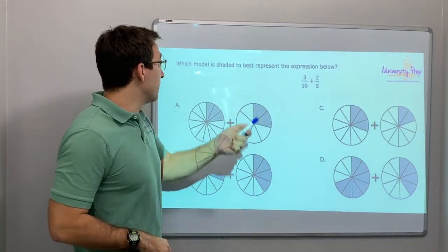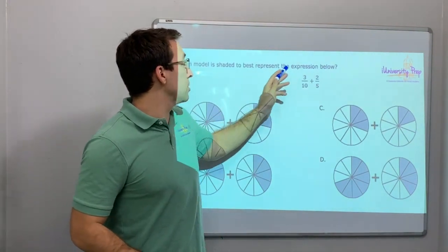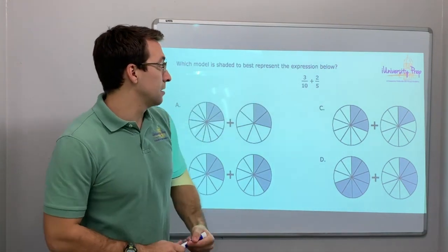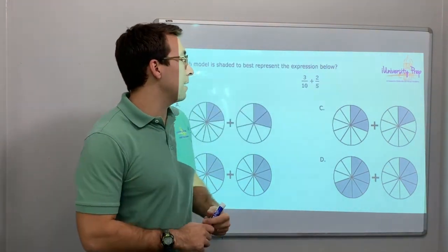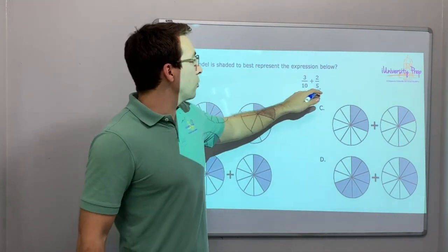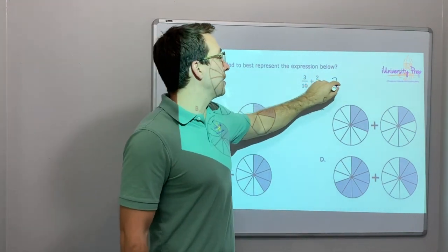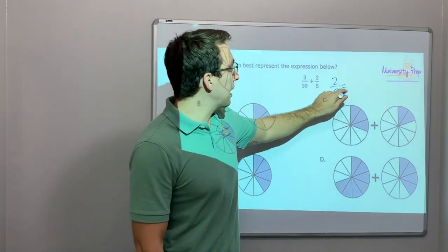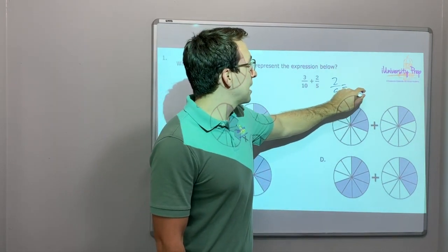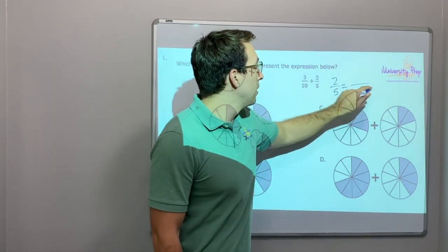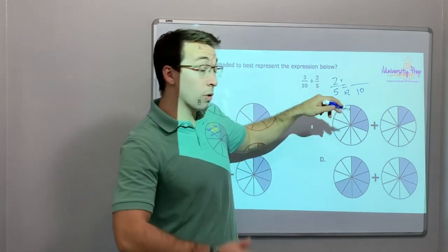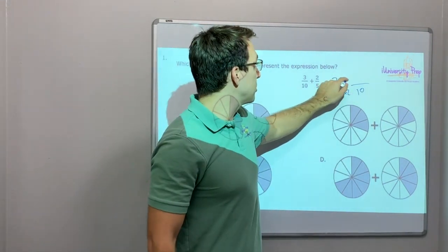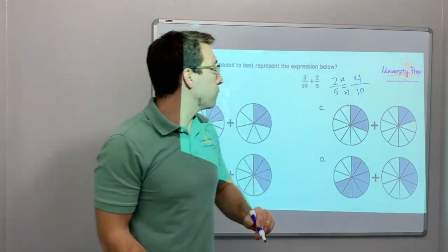Number one: which model is shaded best to represent the expression three tenths plus two fifths? If we're talking about two fifths — doesn't two fifths equal four tenths? If we multiply the five by two, that is ten. And what we do to the bottom we do to the top: two times two is four. So that's four tenths.